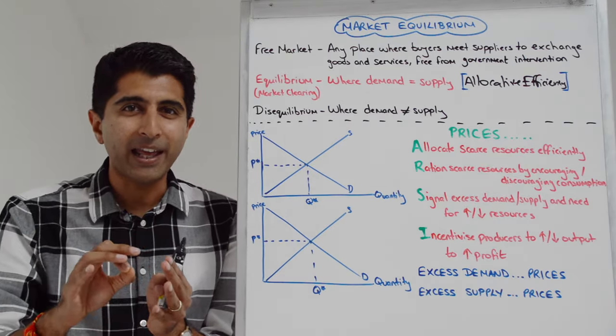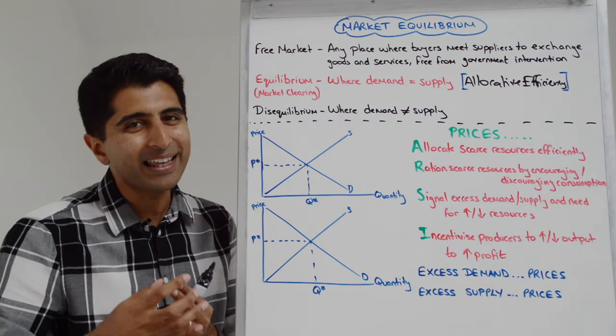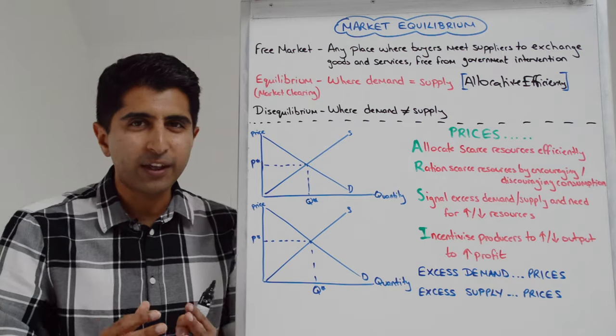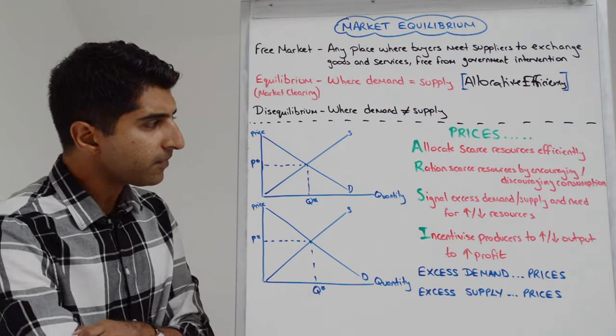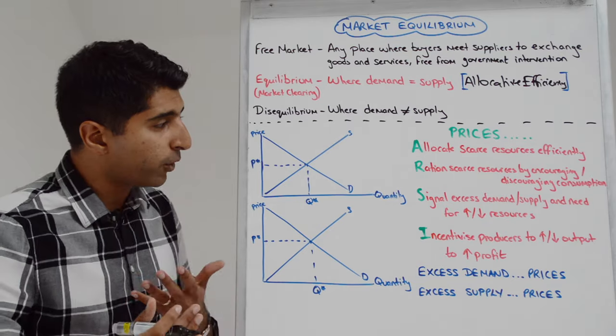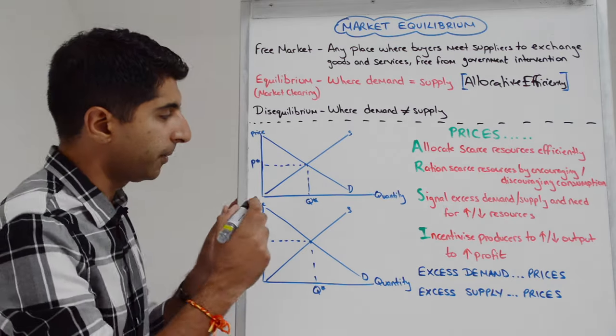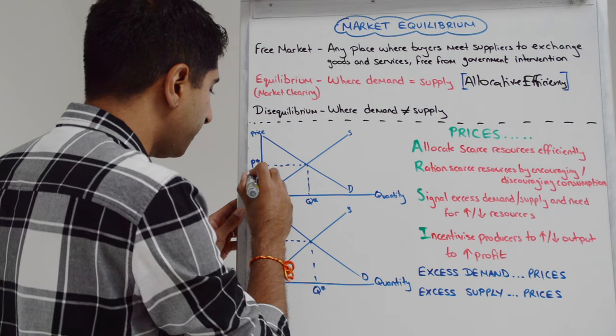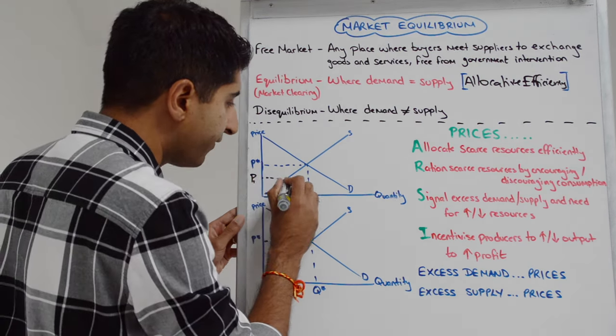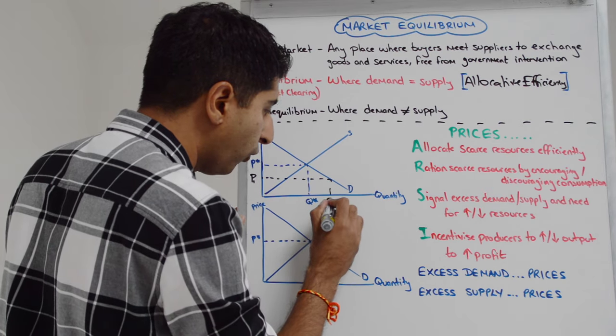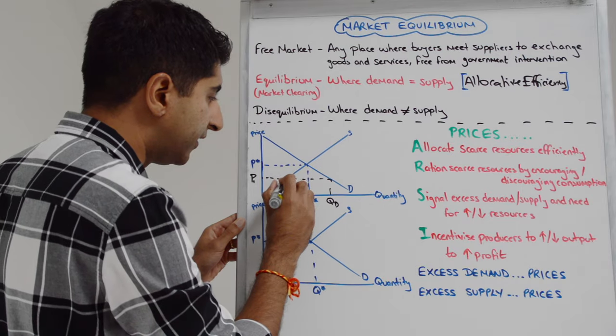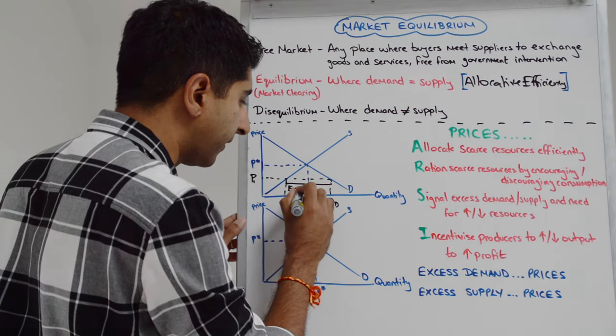But to understand them properly and how they work, we need to take examples of disequilibrium. Let's do that now, starting by looking at excess demand. So take this first diagram over here. A situation of excess demand would occur if prices are below equilibrium. So let's say that prices are not at P star, they're at P1, right? At P1, we can see very clearly that demand is all the way over there, call it QD, whereas supply is only at QS. The difference between those two quantities is excess demand.